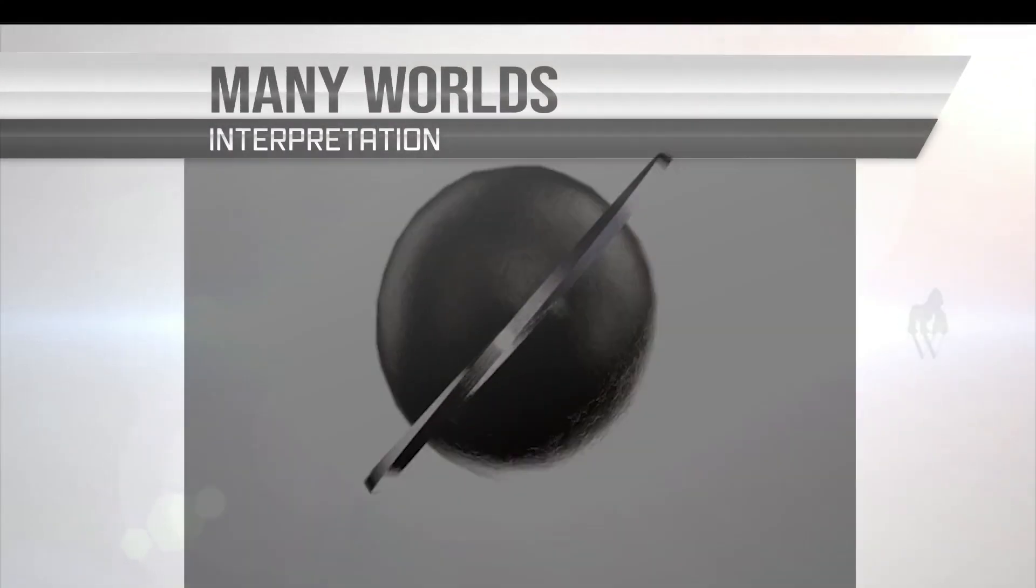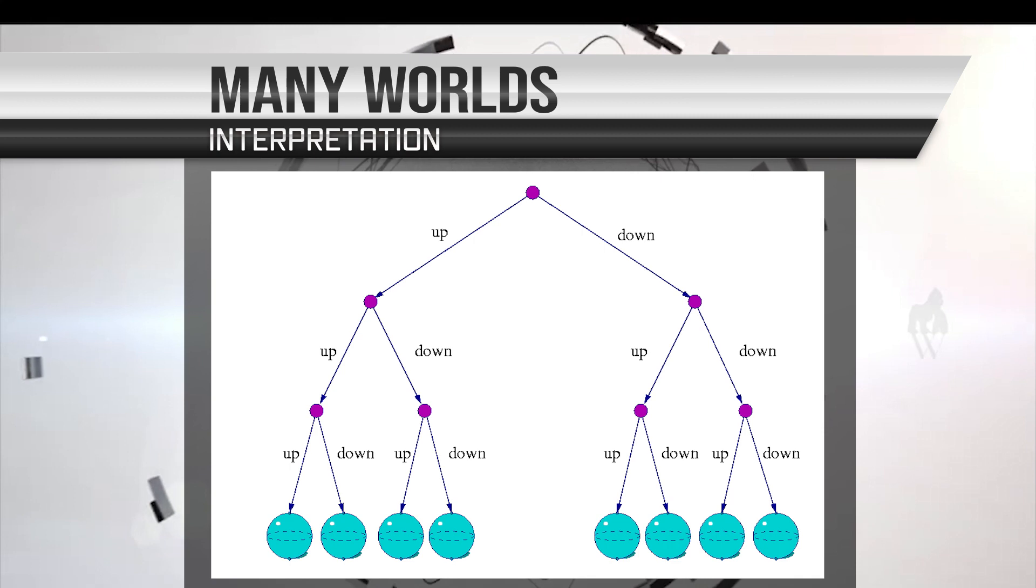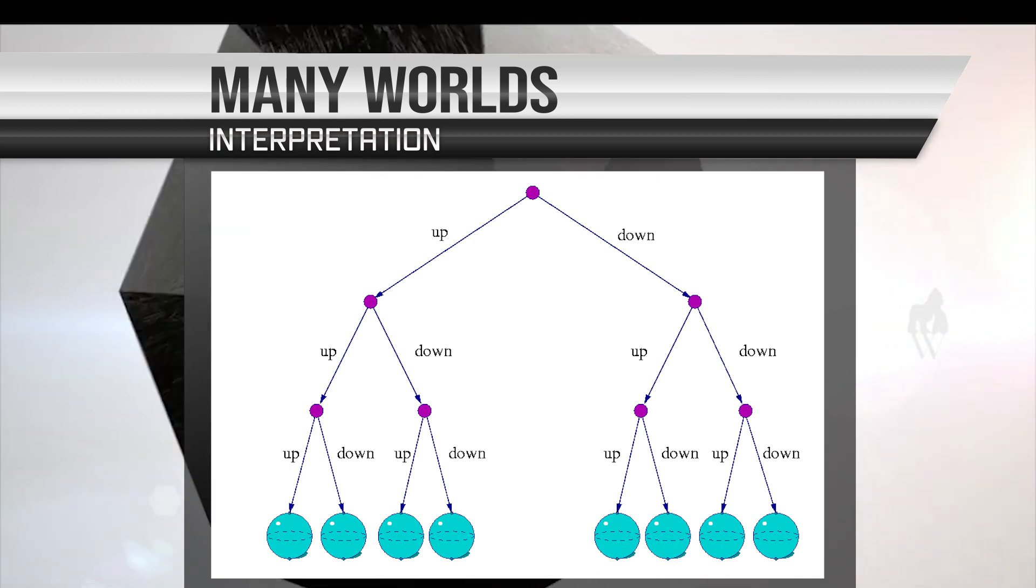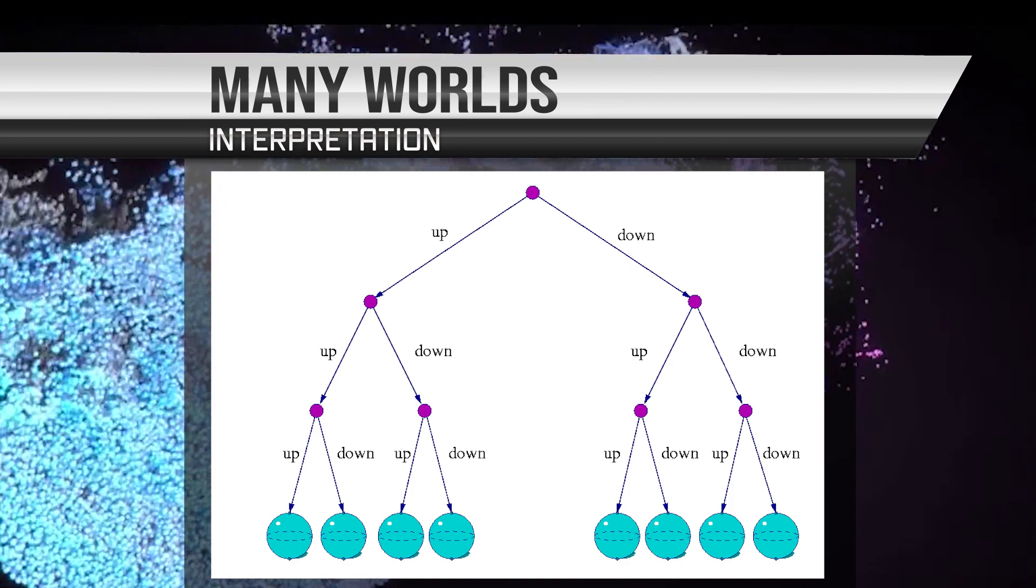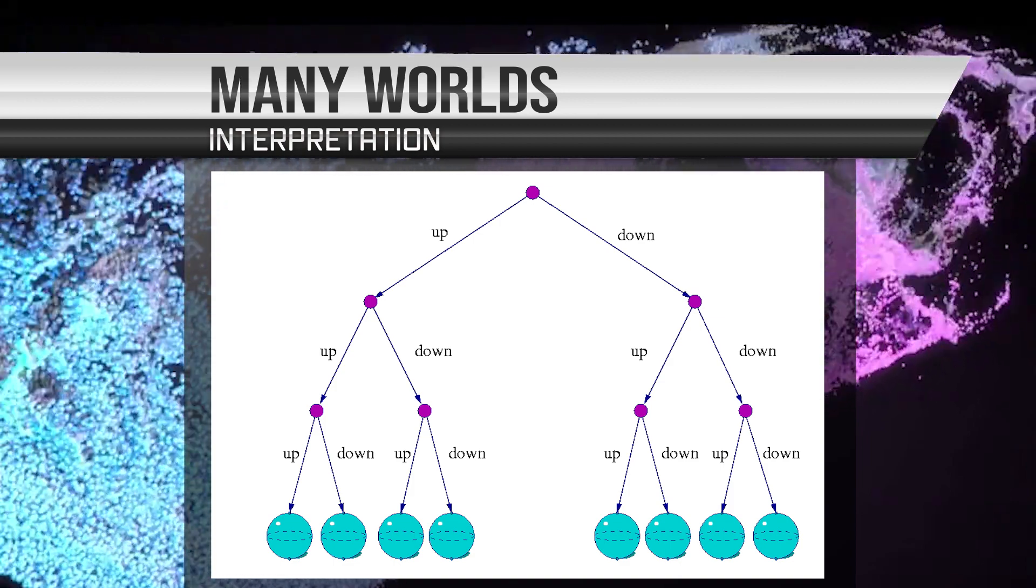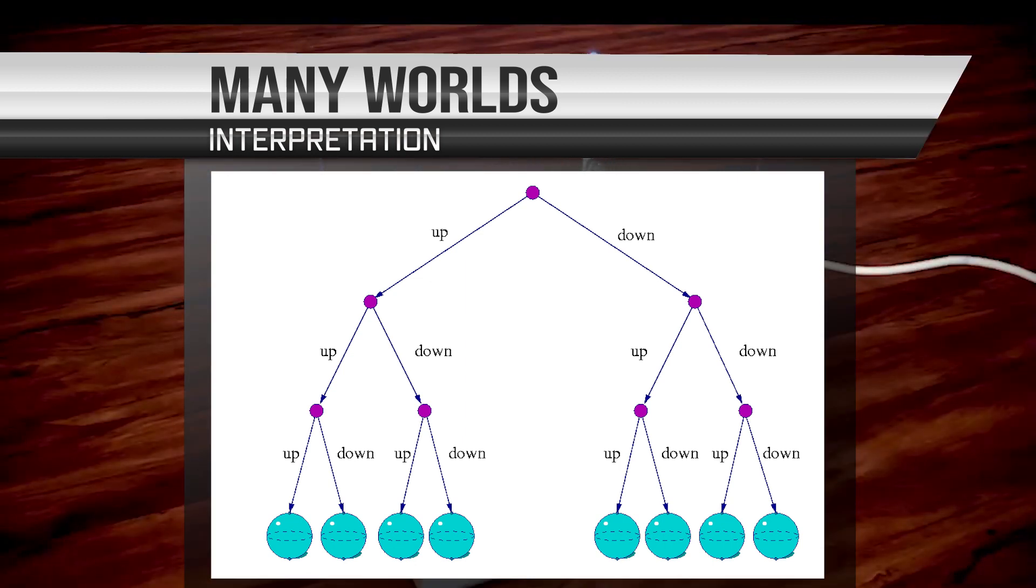Other interpretations, such as the many worlds interpretation, suggest that the act of observing a quantum object does not affect its behavior, and that the universe splits into multiple parallel worlds each time a quantum measurement is made. In this interpretation, the different outcomes of the measurement are observed in different parallel worlds.